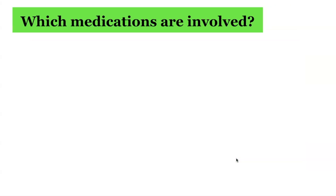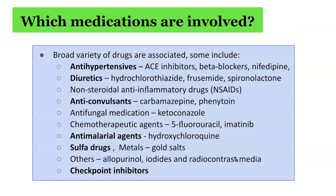Which medications are involved in lichenoid drug eruptions? There is a very long list of medications known to induce lichenoid reactions. Key groups include antihypertensive medications such as ACE inhibitors, beta blockers, and calcium channel blockers; diuretics including hydrochlorothiazide, furosemide, and spironolactone; non-steroidal anti-inflammatory drugs; anti-convulsants such as carbamazepine and phenytoin; antifungal medications; chemotherapeutic agents such as 5-fluorouracil; anti-malarial agents such as hydroxychloroquine; sulfa drugs; other drugs such as allopurinol; as well as checkpoint inhibitors.